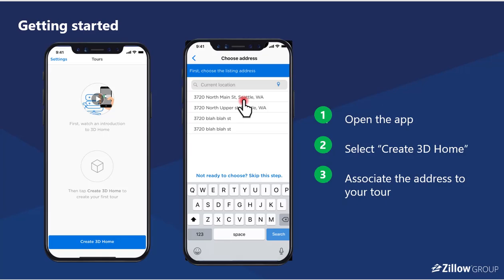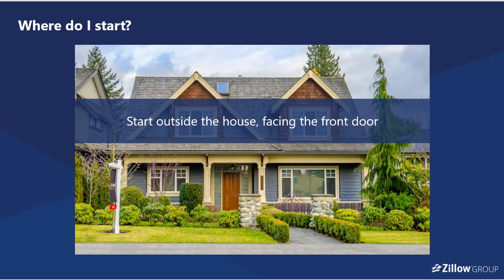Getting started: when you open the app, you'll see the option to select 'Create 3D Home,' and then you can associate an address with your tour right then. Or if you're just practicing to get the feel of it, you can skip that part and go straight into tour creation, which you don't have to publish. Typically, starting at the front of the house is a great place to set the context of what people will be walking into in their immersive experience.